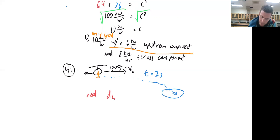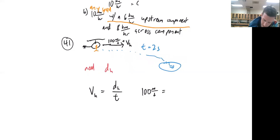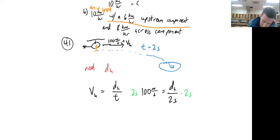I need the distance horizontal. I have time and I have velocity horizontal. From my physics everything sheet I notice that velocity horizontal equals distance horizontal over time. Plugging in values: 100 meters per second equals the distance horizontal over two seconds. Since both the velocity and the time are horizontal, I can use them together. To find distance, I multiply both sides by two seconds. Those cancel and I get distance horizontal equals 200 meters.